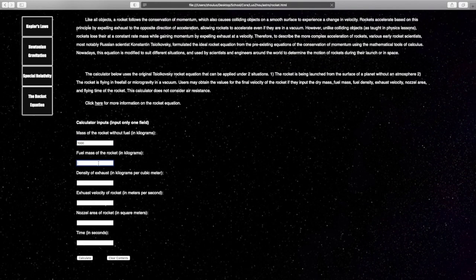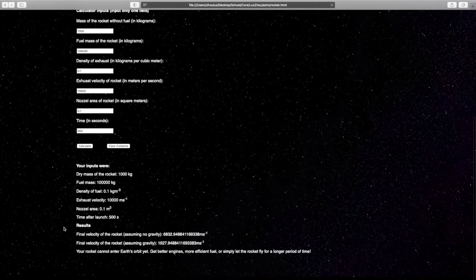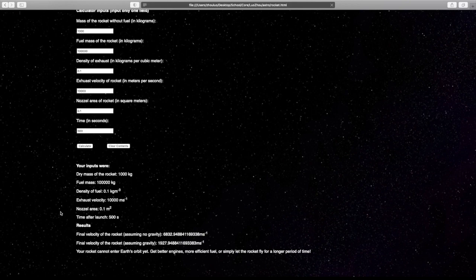The calculator linked in the description allows users to input basic parameters of a rocket to obtain the rocket's change in velocity in a specific period of time. The calculator outputs two values: the change in velocity of the rocket with and without the consideration of gravity.